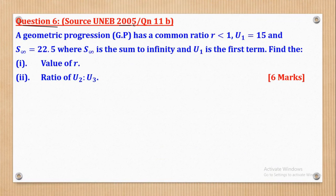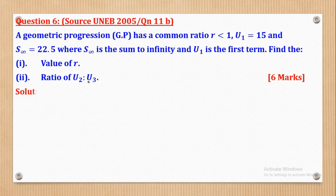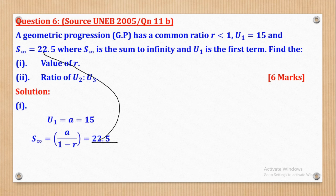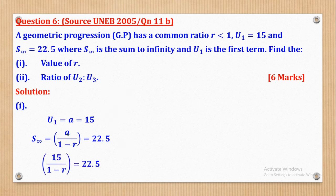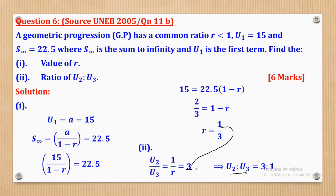Question 6 (UNEB 2005, Paper 1, Question 11b): A GP has common ratio R < 1, first term U1 = 15, and sum to infinity S∞ = 22.5. Find R and the ratio U2 to U3. Using S∞ = A/(1 - R) = 22.5 and substituting A = 15, cross-multiplying gives R = 1/3. The ratio U2/U3 is the reciprocal of R, which is 3, so the ratio U2 : U3 = 3 : 1.